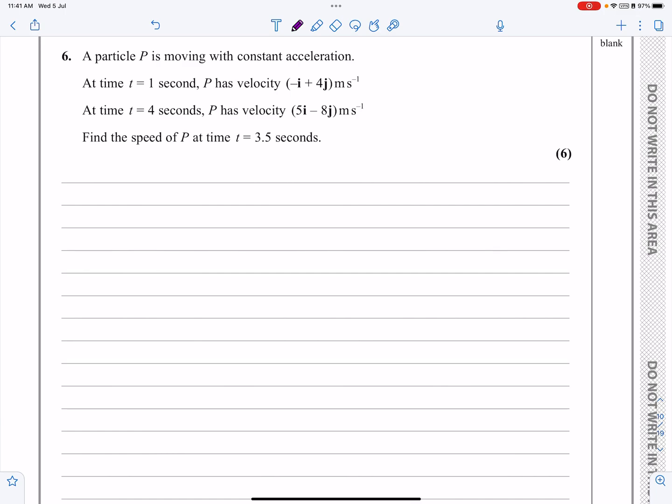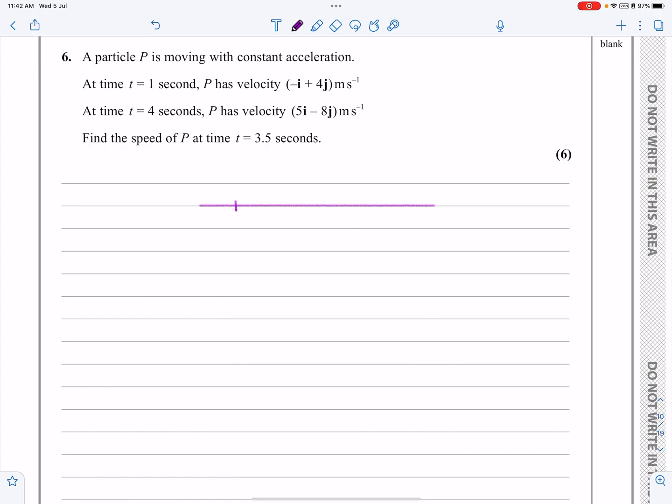One thing I like to do is draw out a quick diagram because it puts everything in perspective when trying to work out what's going on. So if the particle moves from zero to a final position B, at point A after one second when t equals one, the velocity is minus i plus 4j. This would be t equals naught.